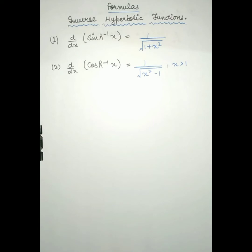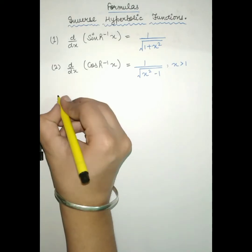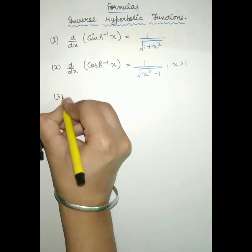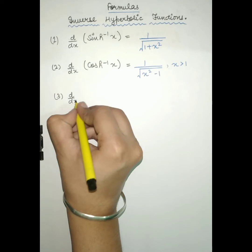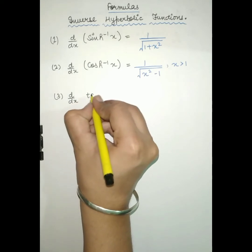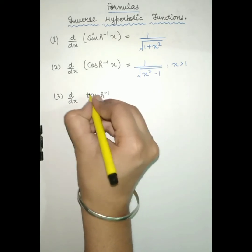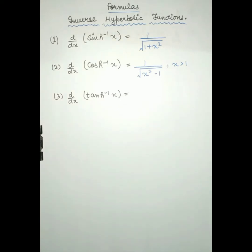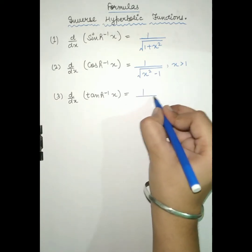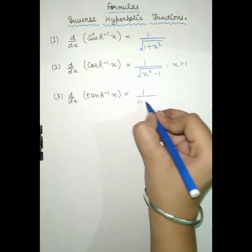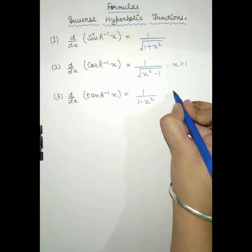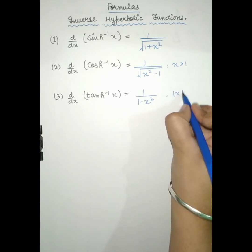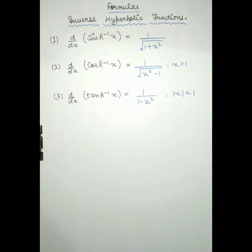Third is the derivative of tan hyperbolic inverse x, which will be equal to 1 upon 1 minus x square, where mod of x is always less than 1.